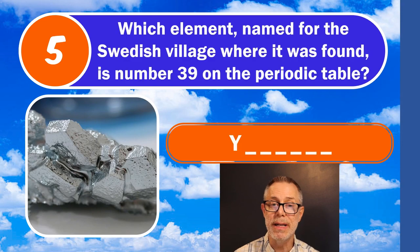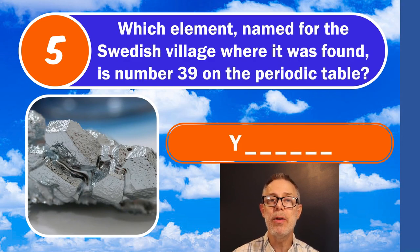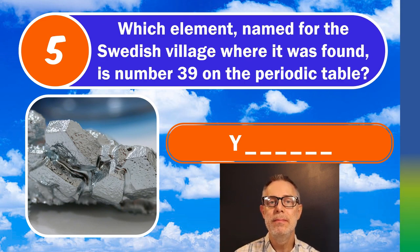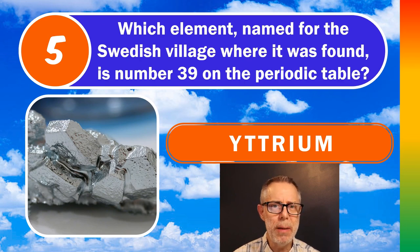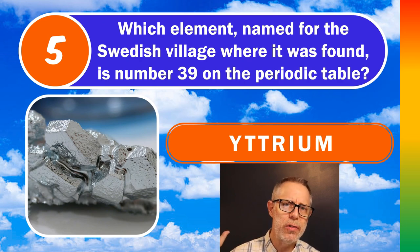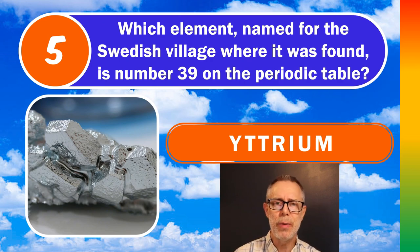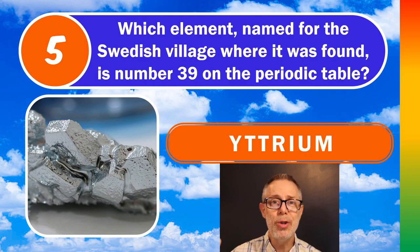Question number five: which element, named for the Swedish village where it was found, is number 39 on the periodic table? The answer is Yttrium — spelled with a Y, but pronounced 'Yttrium.' Through all of my quizzes, there's usually one or two people who say they don't like chemical formula or periodic table questions. Well, there's only 118 elements, so stick around — eventually you'll know them all.